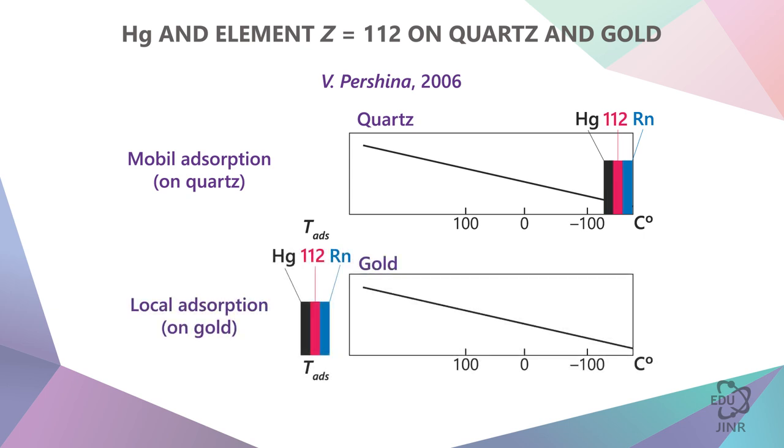However, if the surface is not made of quartz but of gold, then radon will still follow the same path, and mercury will stop at 104 degrees Celsius. This is where it adheres to gold.